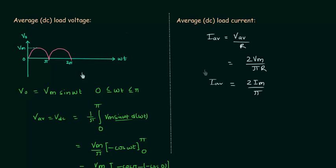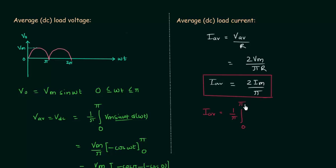You can also integrate the current through the load resistance directly and you will have the same result. I_average equals (1/π) times the integral from 0 to π of Im sin(ωt) d(ωt), which gives the same result. You can also use this result to obtain the average DC load voltage. Both ways are correct.